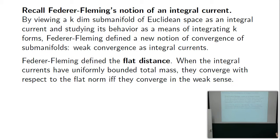The flat distance they defined coincides well with weak convergence: convergence in the weak sense agrees with flat convergence if there is a uniform bound on total mass. In order to define the flat distance, we need to understand for a current (like a submanifold) what its mass is — a kind of weighted volume — and what the boundary is, defined using Stokes' theorem.